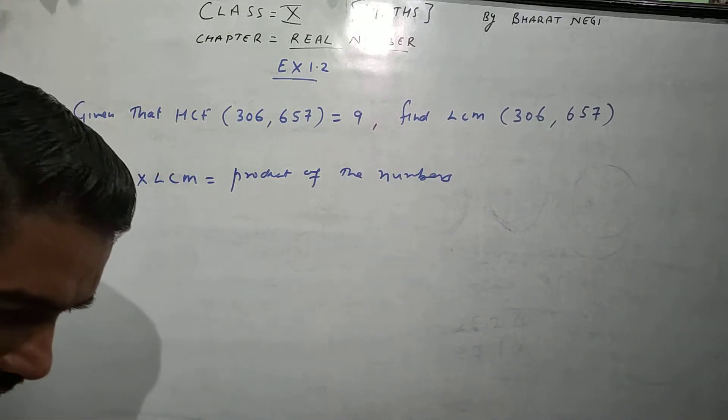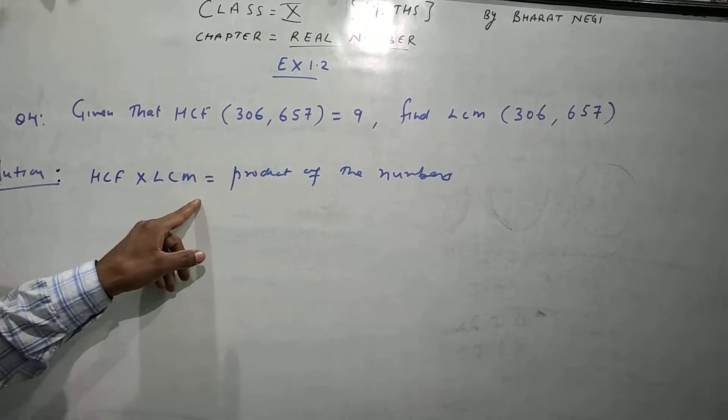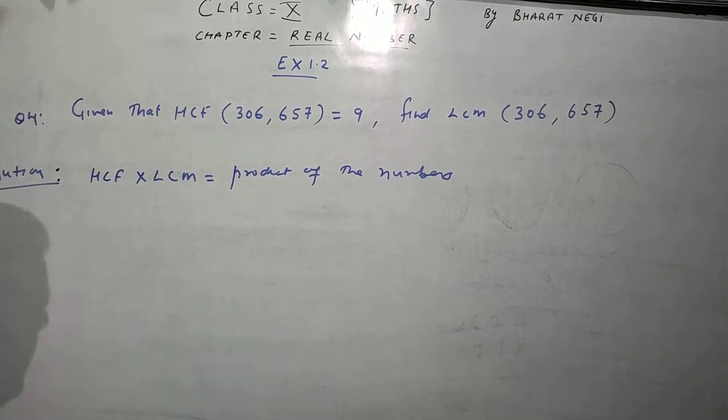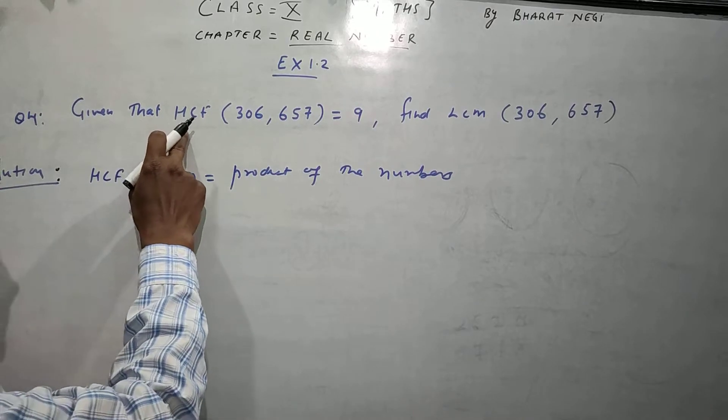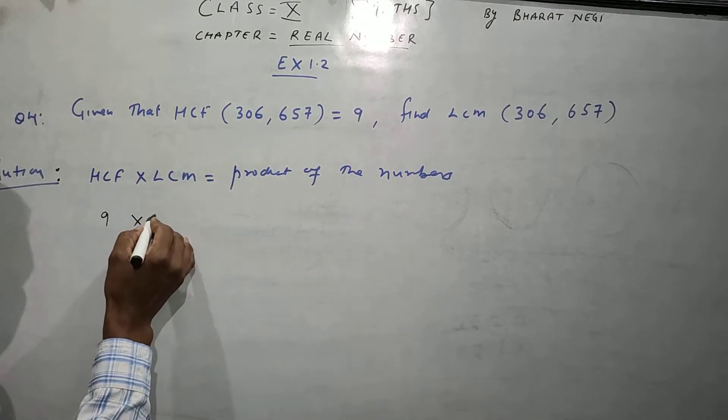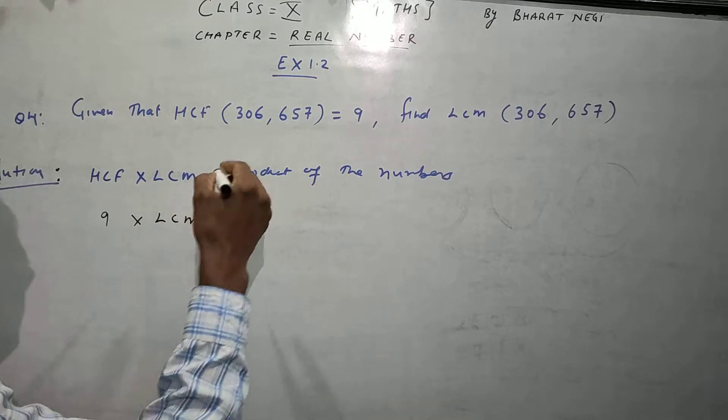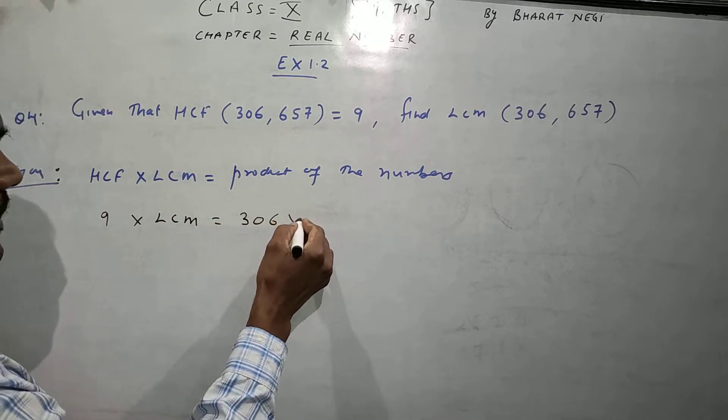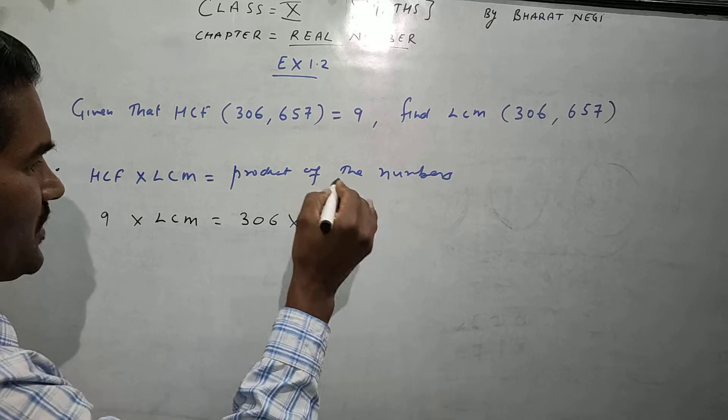Okay, as we know that HCF times LCM equals the product of the numbers. Now, HCF is already given as 9 and LCM we have to find, and the product of the numbers is 306 times 657.